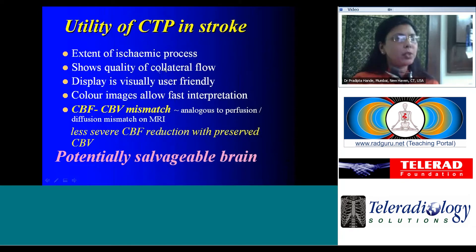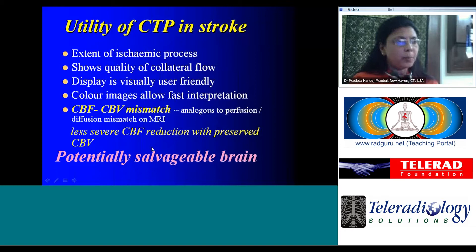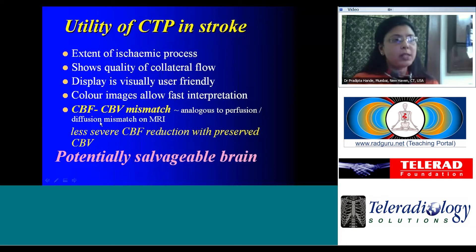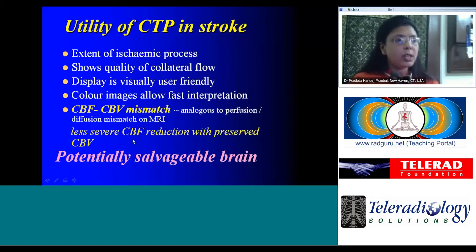The utility of CT perfusion essentially remains in an ischemic process, giving us a review of the quality of collateral flow. Most importantly, it allows us to pick up potentially salvageable brain, using the various modalities of management to identify CTF and CBV mismatched areas — the tissue at risk — where there is preserved cerebral blood volume as opposed to a severely reduced cerebral blood flow.